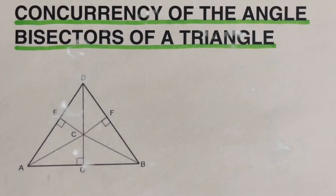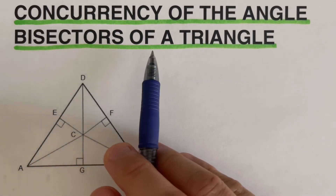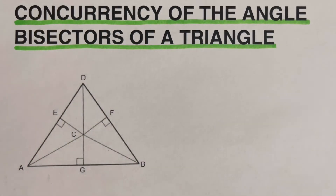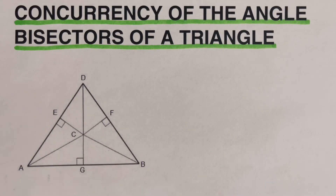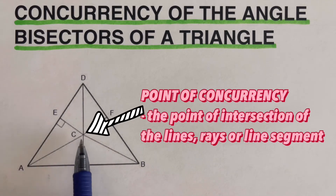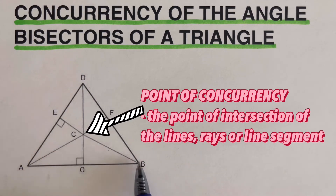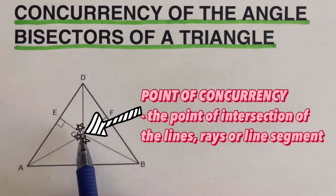Hello everyone. In this video we're going to focus on concurrency of the angle bisectors of a triangle. Before we go over this figure, let's have the definition of concurrency or point of concurrency. A point of concurrency is the point of intersection of lines, rays, or line segments. In this case, this point here is the point of concurrency because all of these line segments are meeting or intersecting at this point.